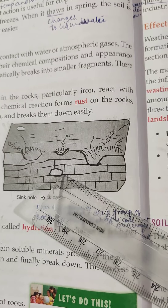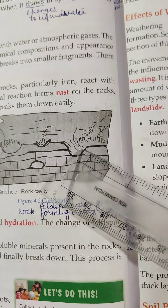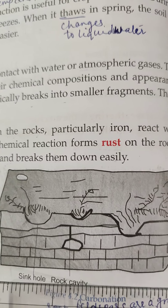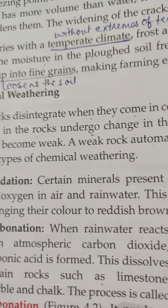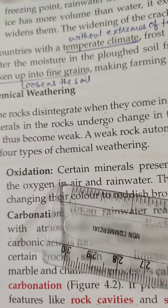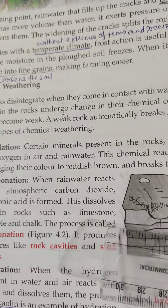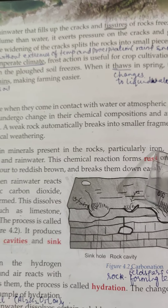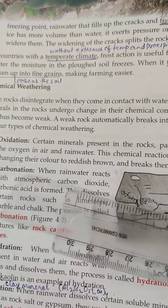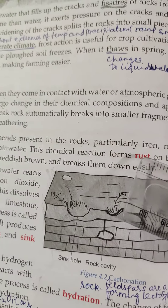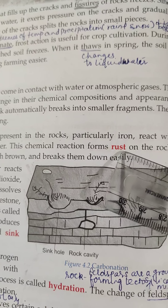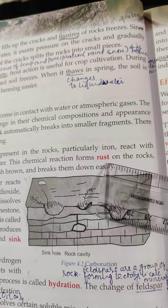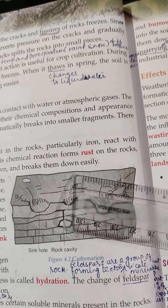Chemical weathering means when the rocks come in contact with water or atmospheric gases, some chemical reactions take place in the rocks, and as a result of those chemical reactions the rocks break. The first type is oxidation: certain minerals present in the rocks, especially iron, when they react with water and oxygen present in the air, form rust on the surface of rocks, changing their color to reddish brown and breaking them easily.